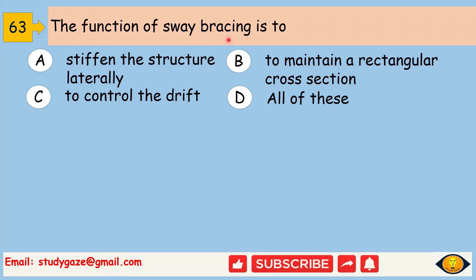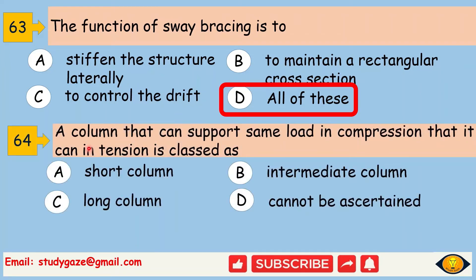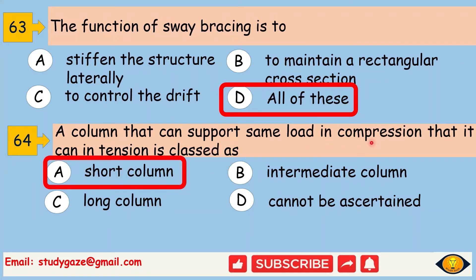The function of sway bracing is to stiffen the structure laterally, maintain a rectangular cross section, and control the drift — so all options are correct. Next, a column that can support the same load in compression as it can in tension is classed as a short column.